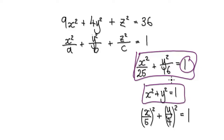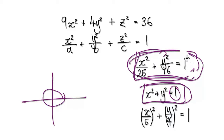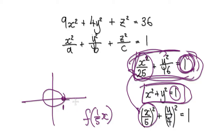If you're trying to sketch this, you would imagine a circle of radius 1 in your mind. And when it equals 1, you can easily understand what's going on. What you're doing is making a transformation in the x direction — normally it's radius 1, so you would stretch this to 5 and then to negative 5.